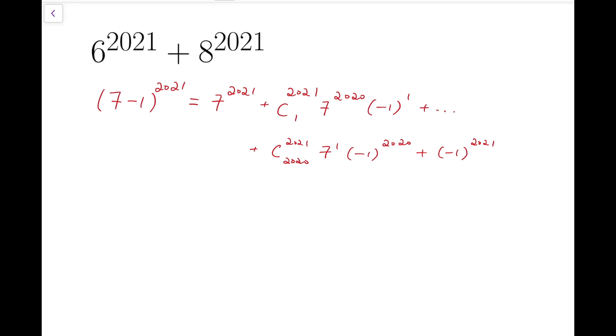Now we're rewriting into this form because we are dividing this number by 49, which is 7 squared. So that means all the powers of 7 with index 2 or above will be cancelled out.